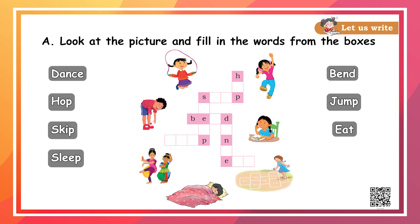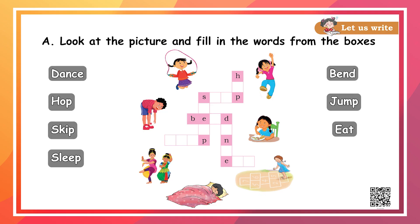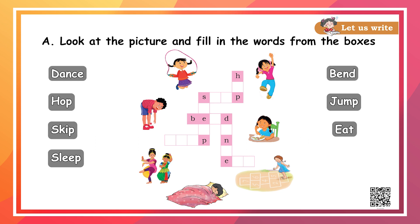Look at these pictures. These children are having fun equally. Why don't you look at the pictures and identify what they are doing, and fill the space given in the crossword. For example, I see one girl hopping and I see a space to write 'hop'.